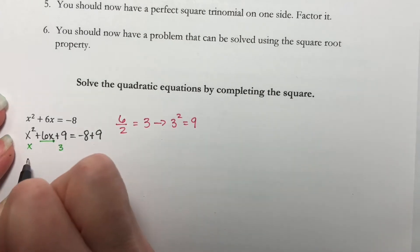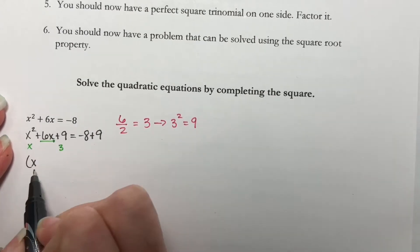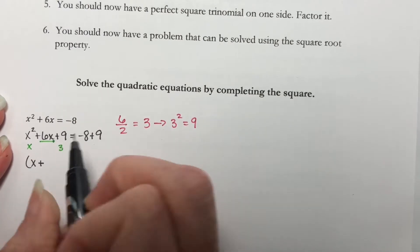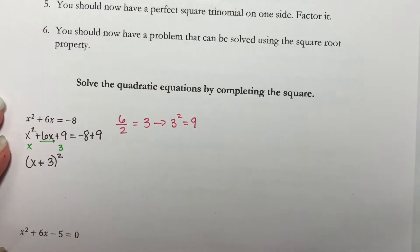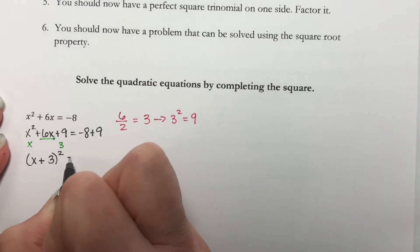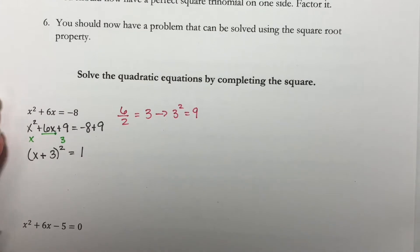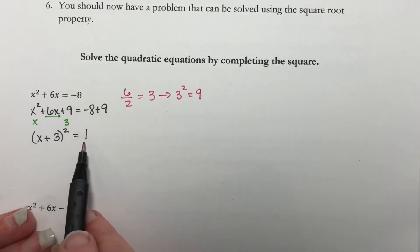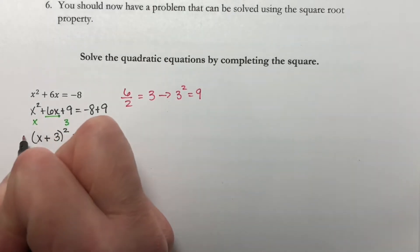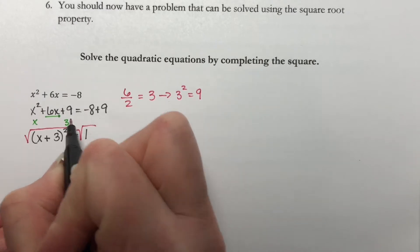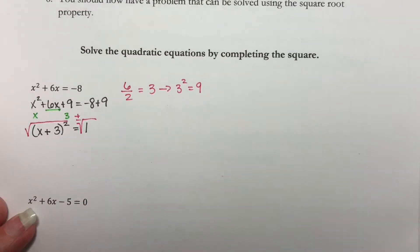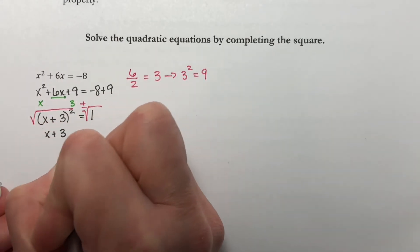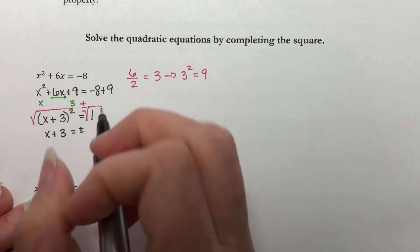Perfect square trinomials always factor with the square root of this, which is x. Whatever this sign is here goes right here, and then the square root of 9 is 3. That's overall squared, and this is going to equal 1. Now this should look like a problem like we were working in the last part where we have something squared equal to a number. Now we can just use the square root property — take the square root of both sides, putting a plus or minus over here.